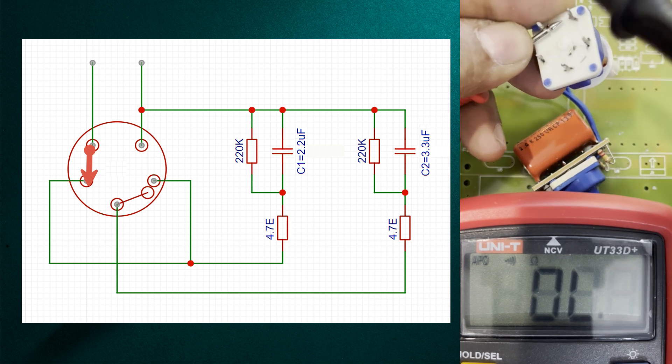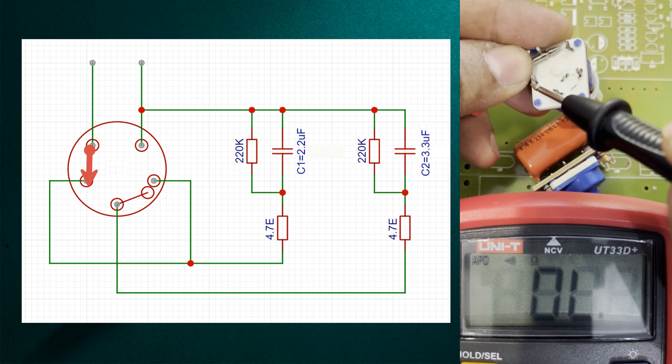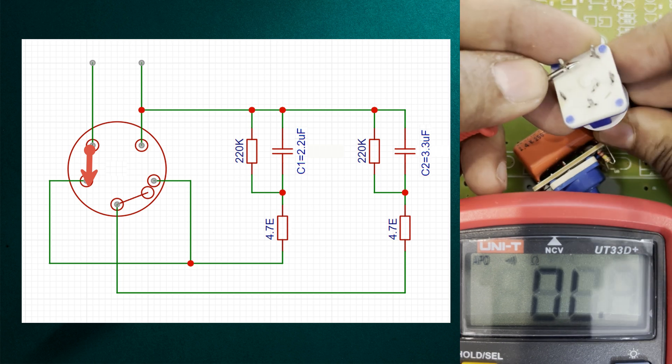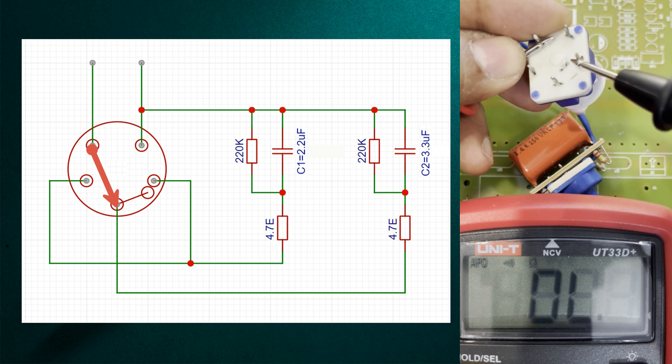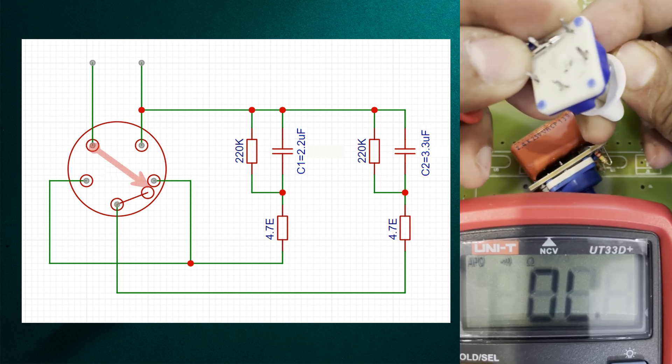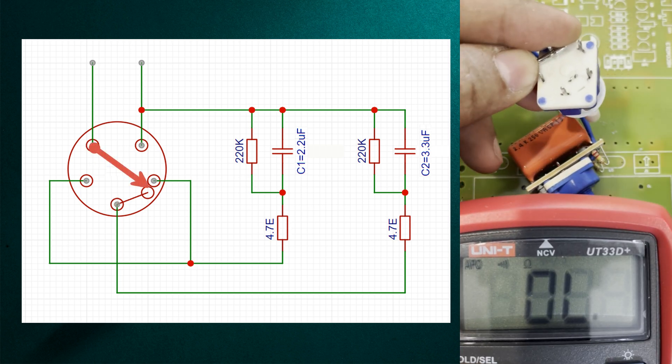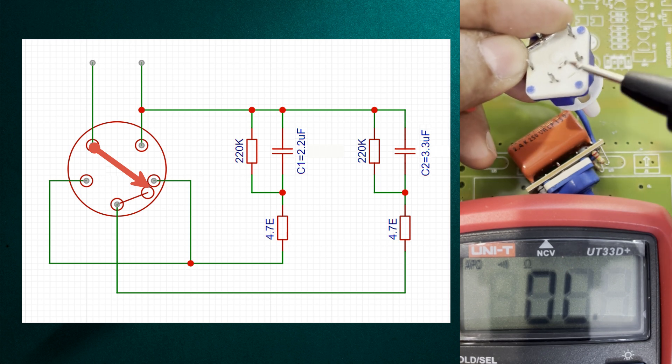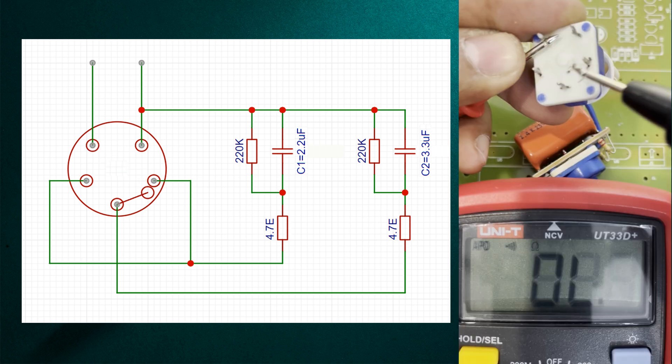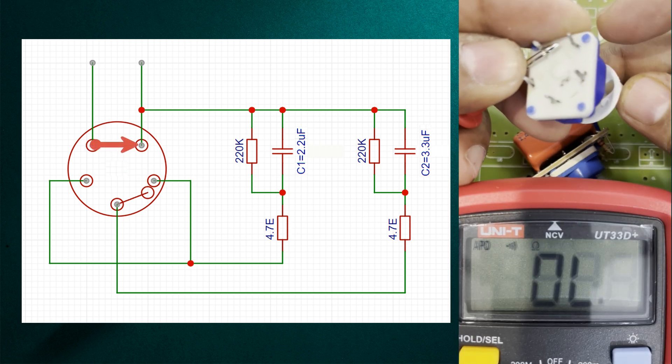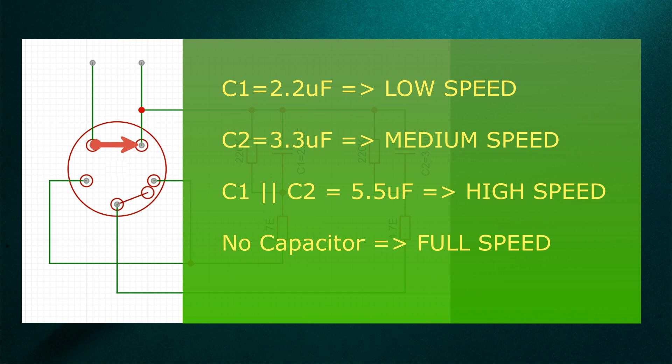When the switch is at position 1, the current flows through capacitor C1 only. When the switch is at position 2, the current flows through capacitor C2 only. But when we move the switch to position 3, terminals 2 and 3 get internally short-circuited, causing capacitors C1 and C2 to become parallel with effective capacitance of C1 plus C2. When we move the switch to position 4, there is no resistance bar and so the fan runs at its full speed.